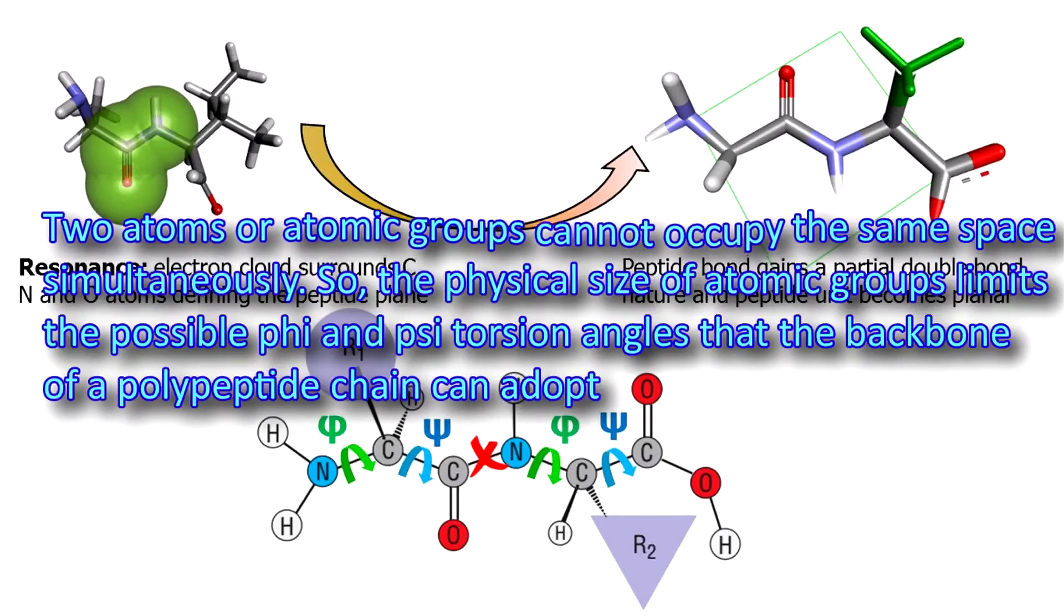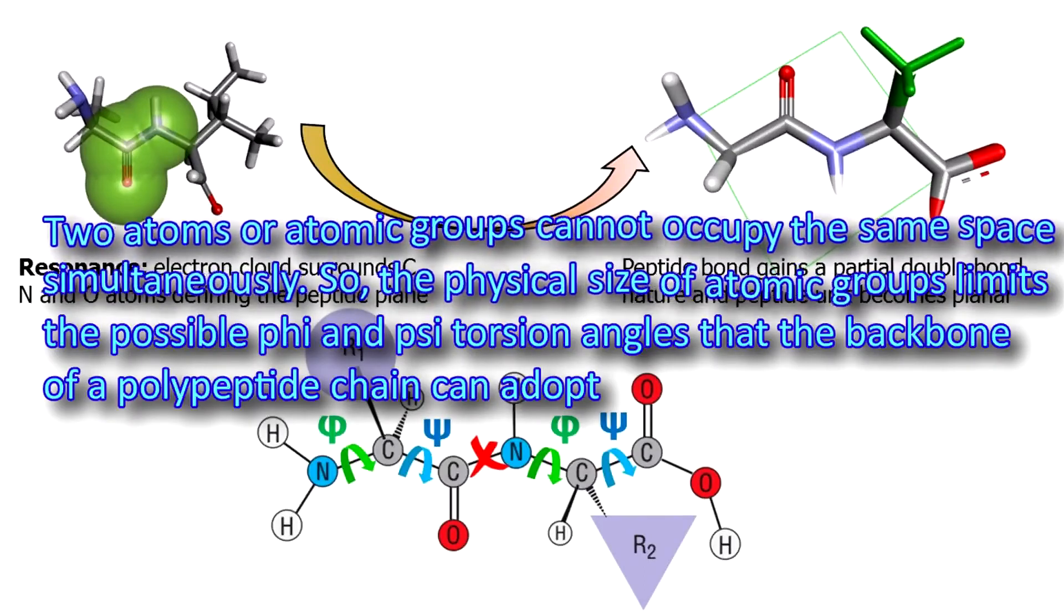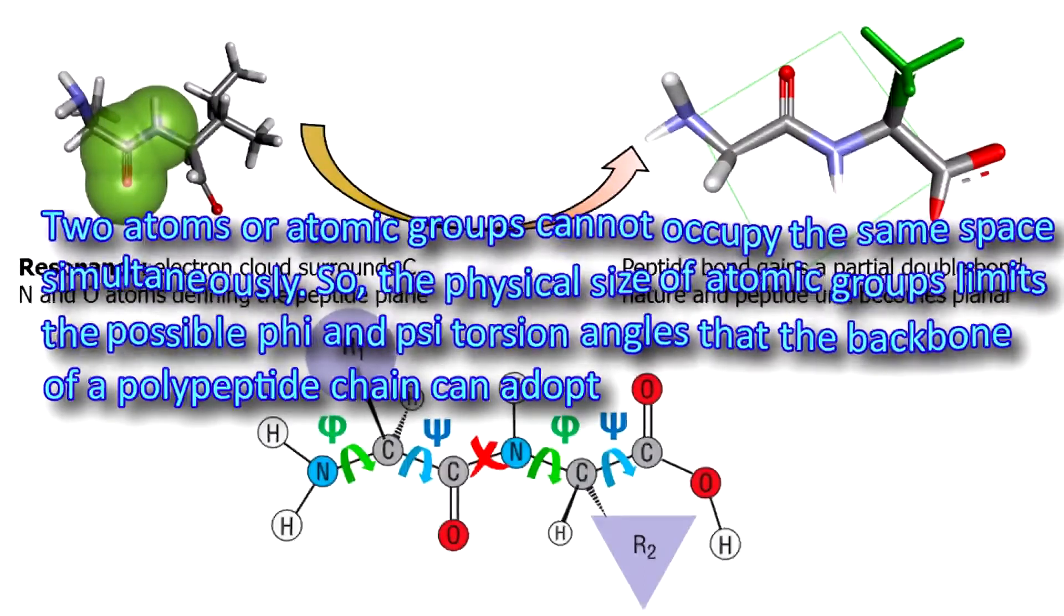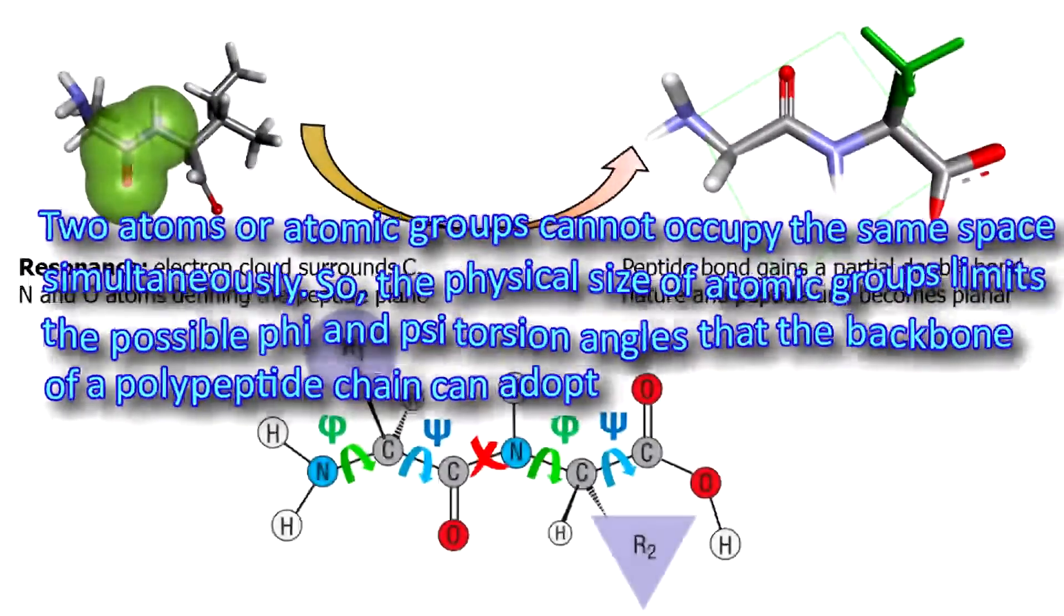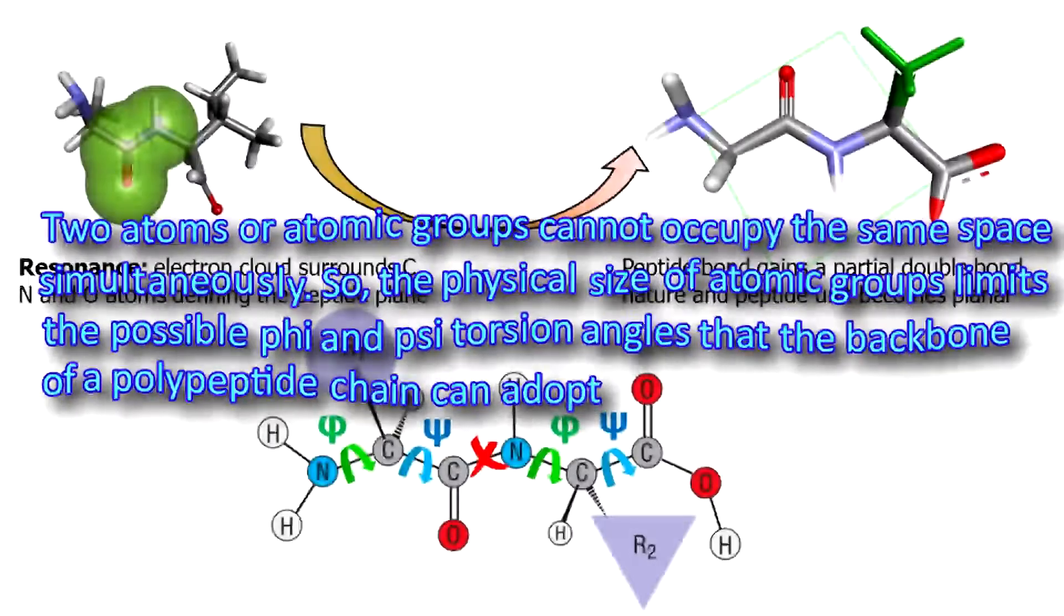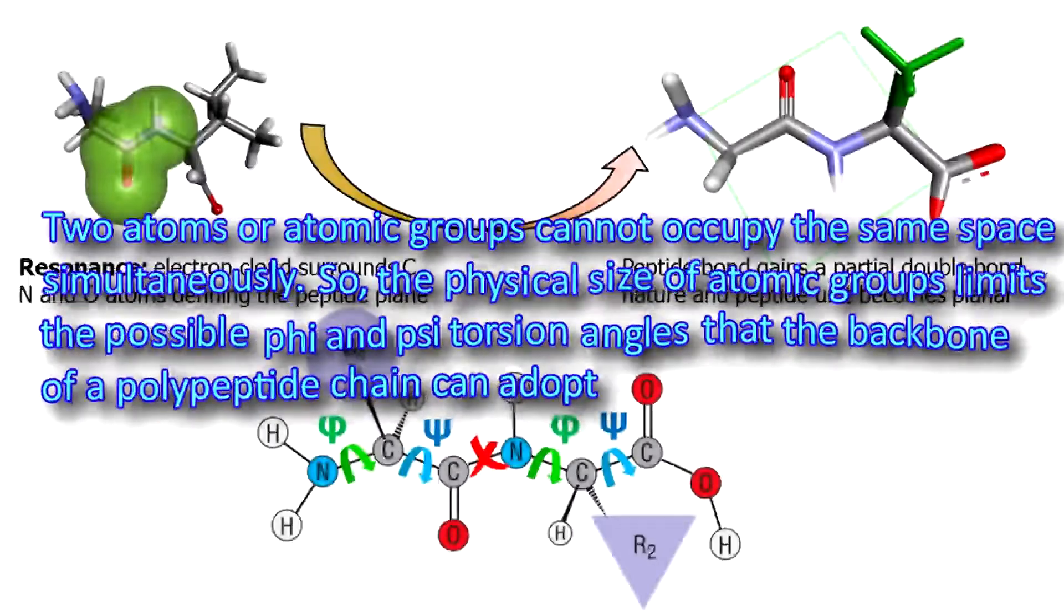Obviously, two atoms or atomic groups cannot occupy the same space simultaneously. So the physical size of atomic groups limits the possible phi and psi torsion angles that the backbone of a polypeptide chain can adapt.